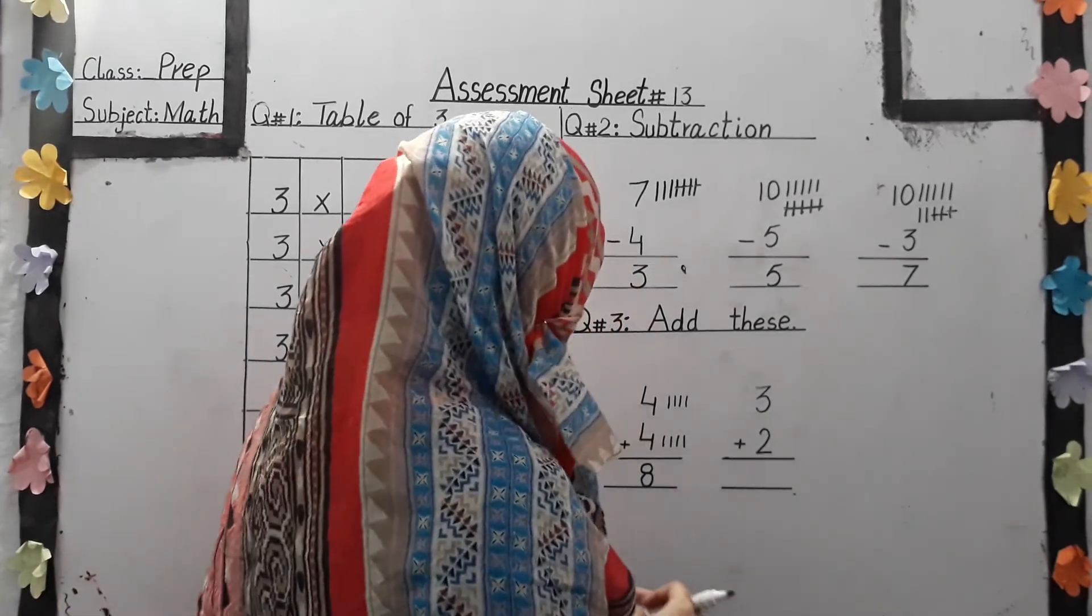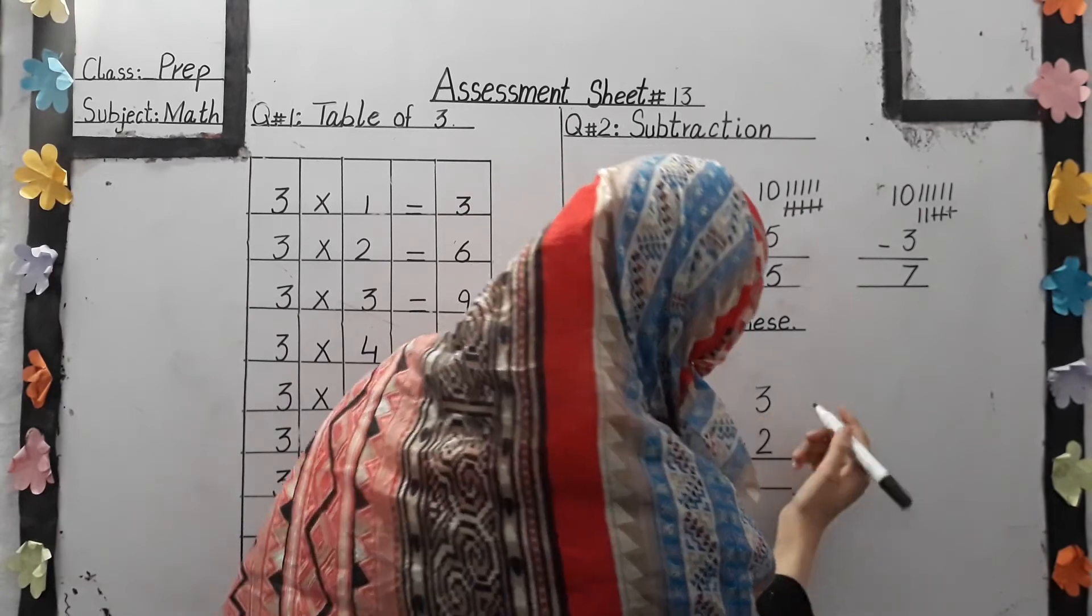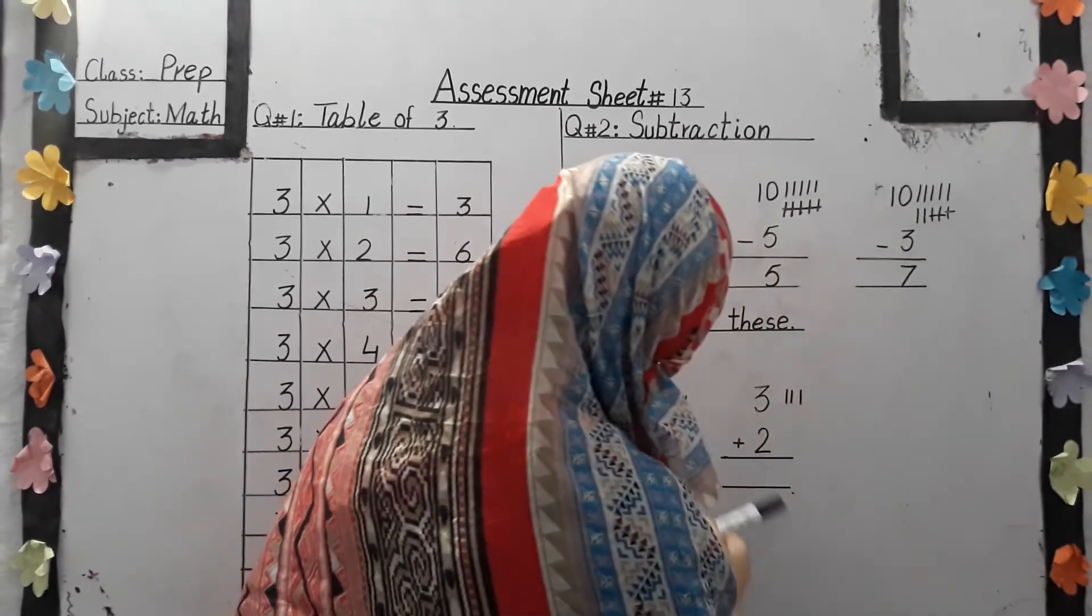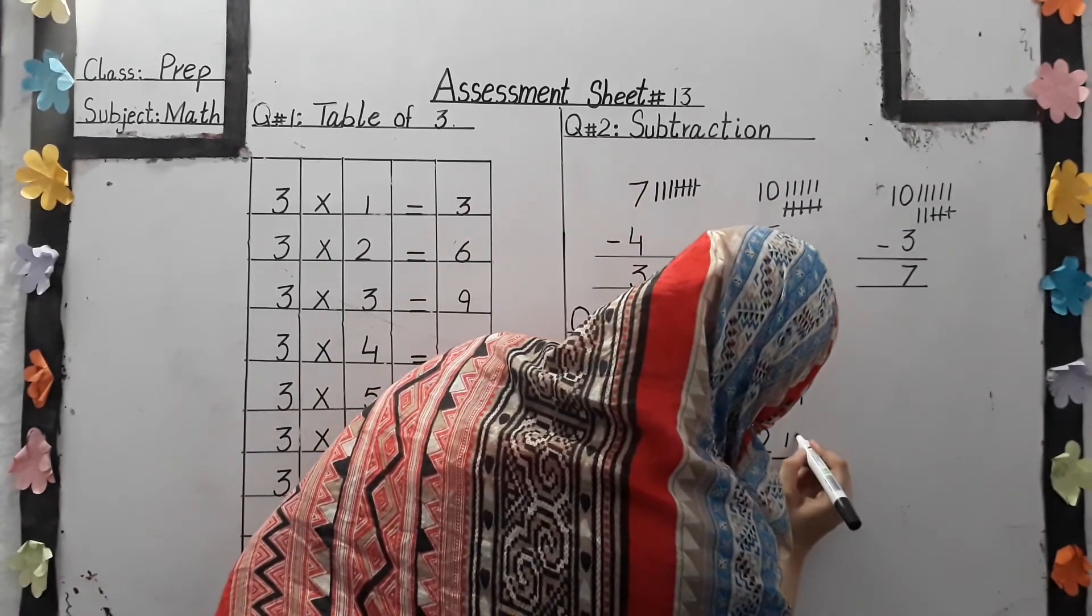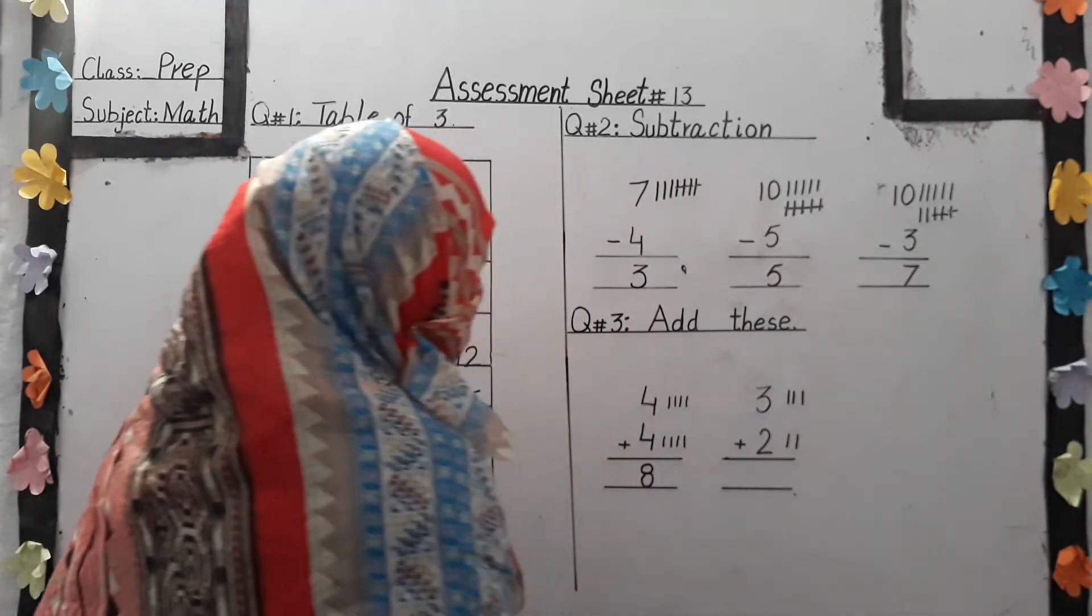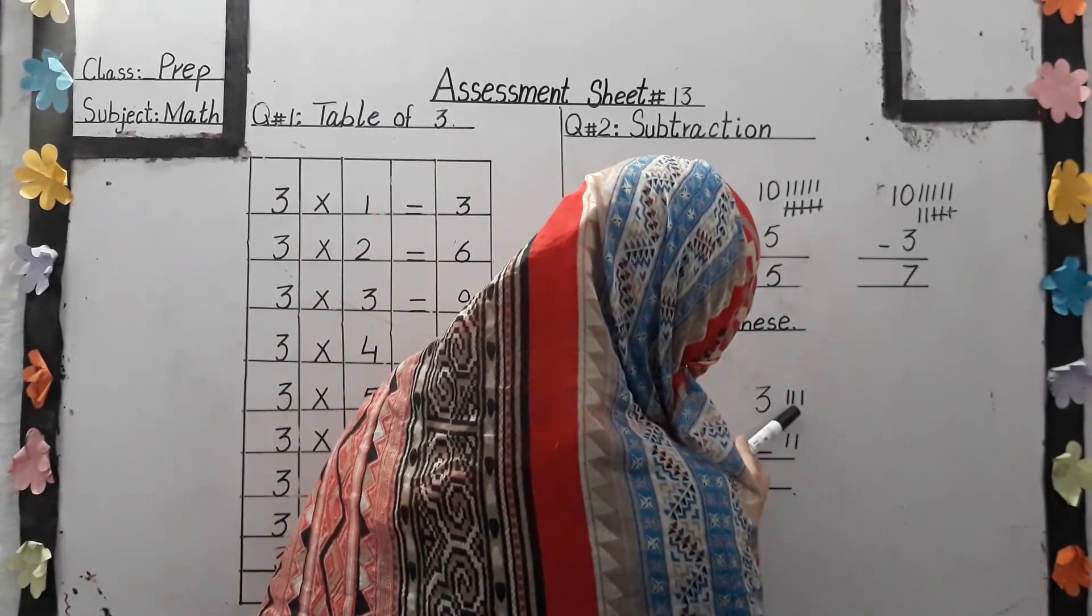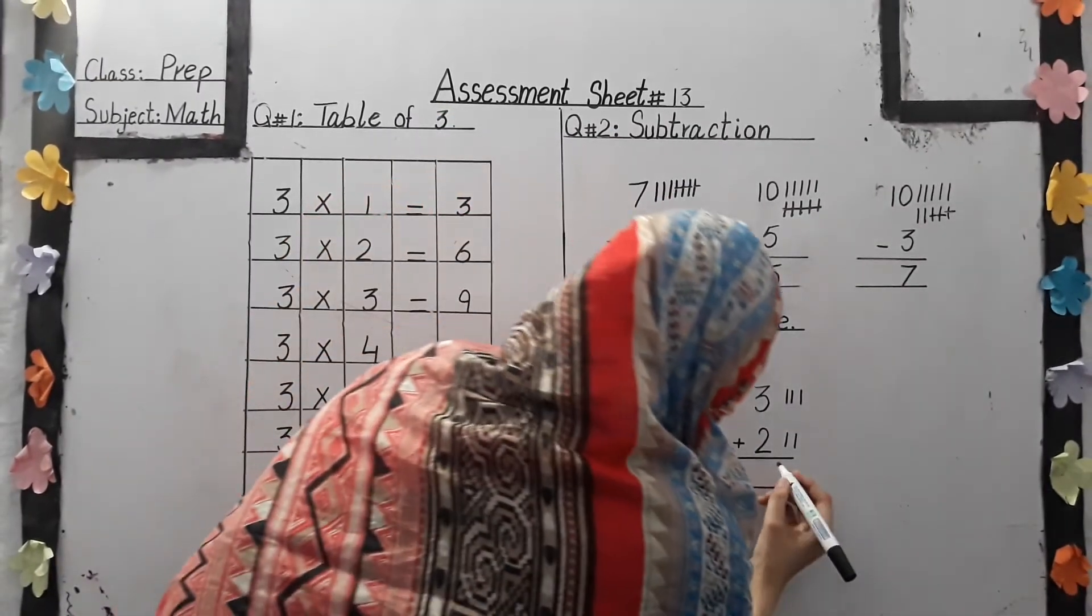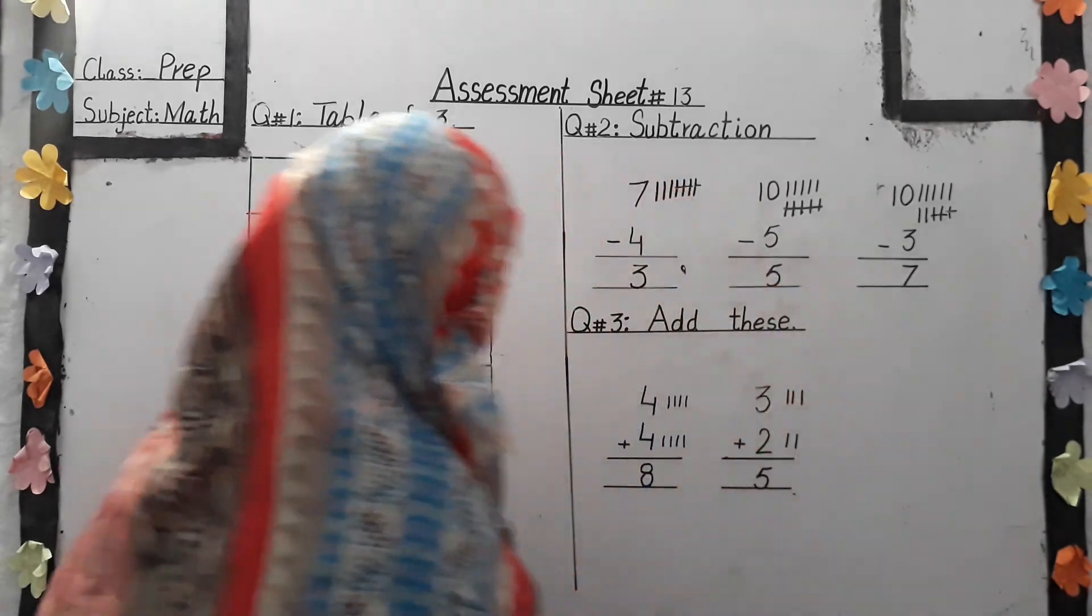Ok students, look at the another question. What is this? This is number 3. So we write here 3 lines. And what is this? 2. We write here 2 lines. Now we start counting: 1, 2, 3, 4, and 5. So we write here 5. The answer is 5.